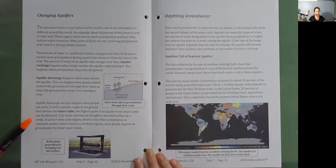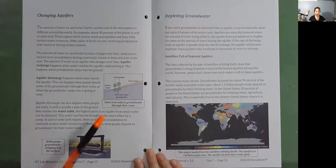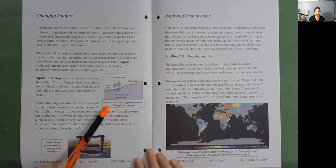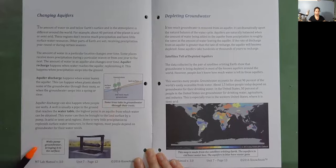This water can then be brought to the land surface by a pump. In arid or semi-arid regions, there is very little precipitation to replenish surface water resources. In these regions, most people depend on groundwater for their water needs. Some trees take in groundwater through their roots. Wells pump groundwater, bringing it to the surface.